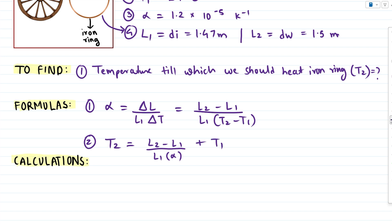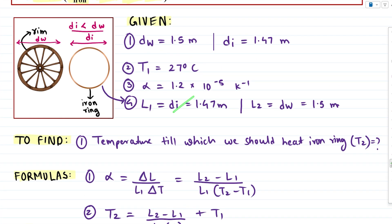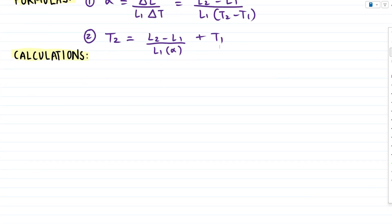So this is the rearranged formula to calculate T2 using formula number 1. Nothing new, just rearrangement. And now all quantities or values are pre-given, so simple substitution should give us the temperature till which we should heat our iron ring.